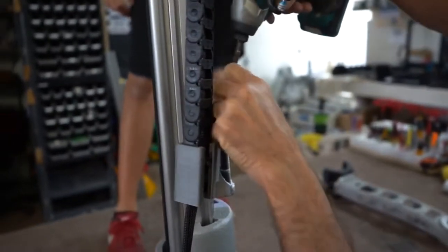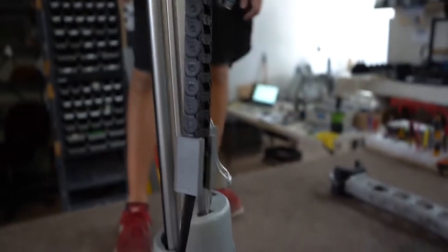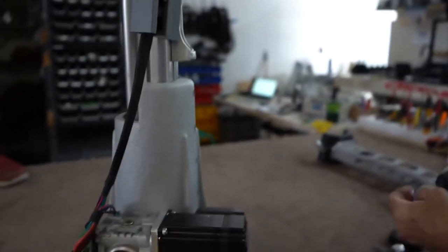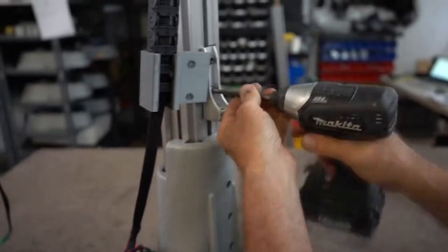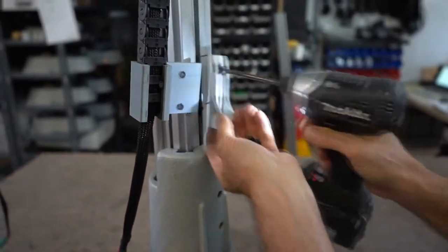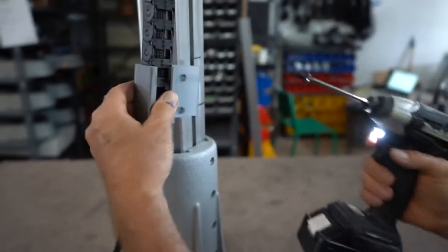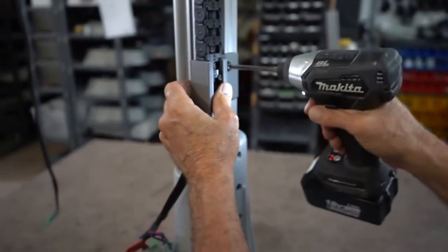You can now loosen the belt tightener and remove it, and place the chain holder back in place. Do not over-tighten these screws for the chain holder.